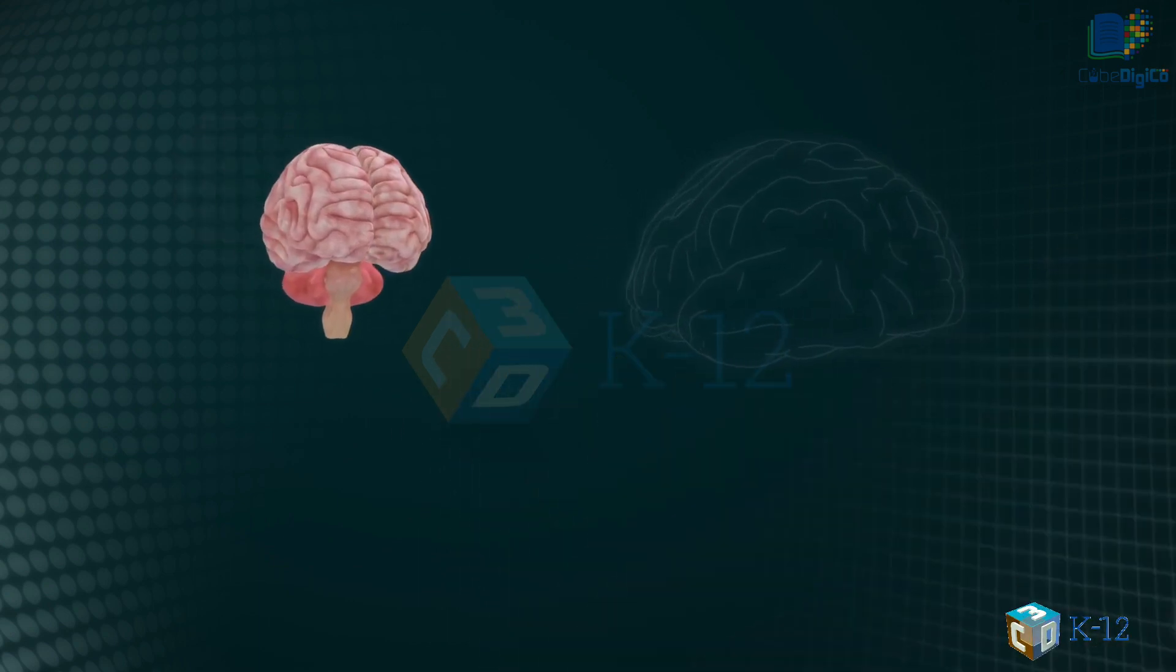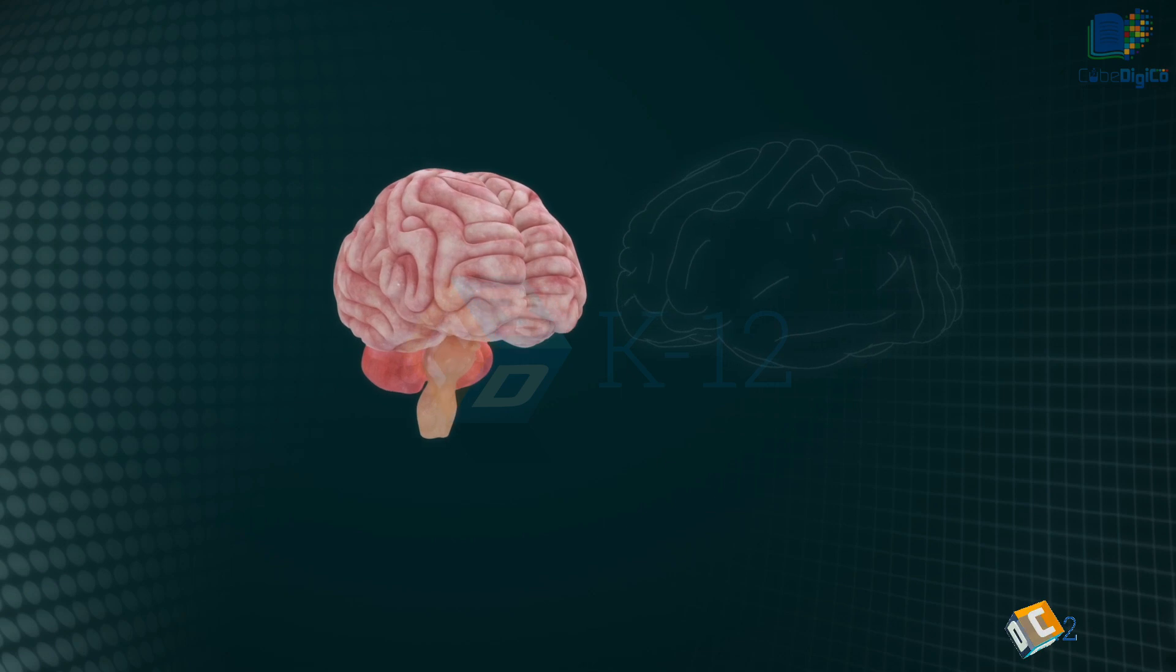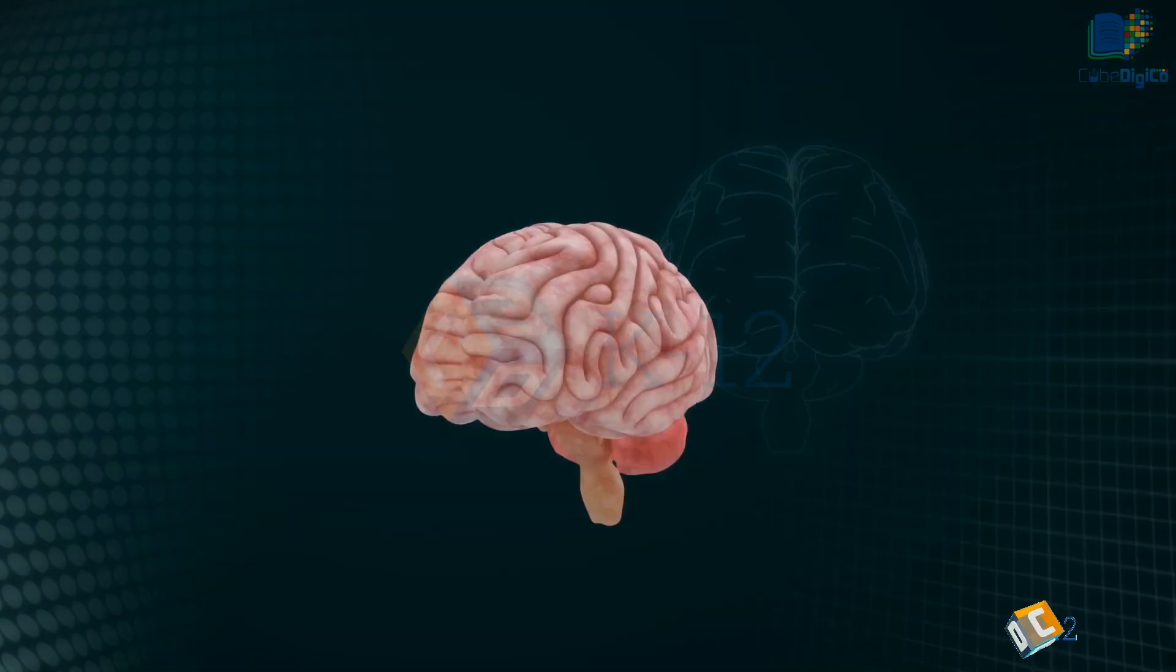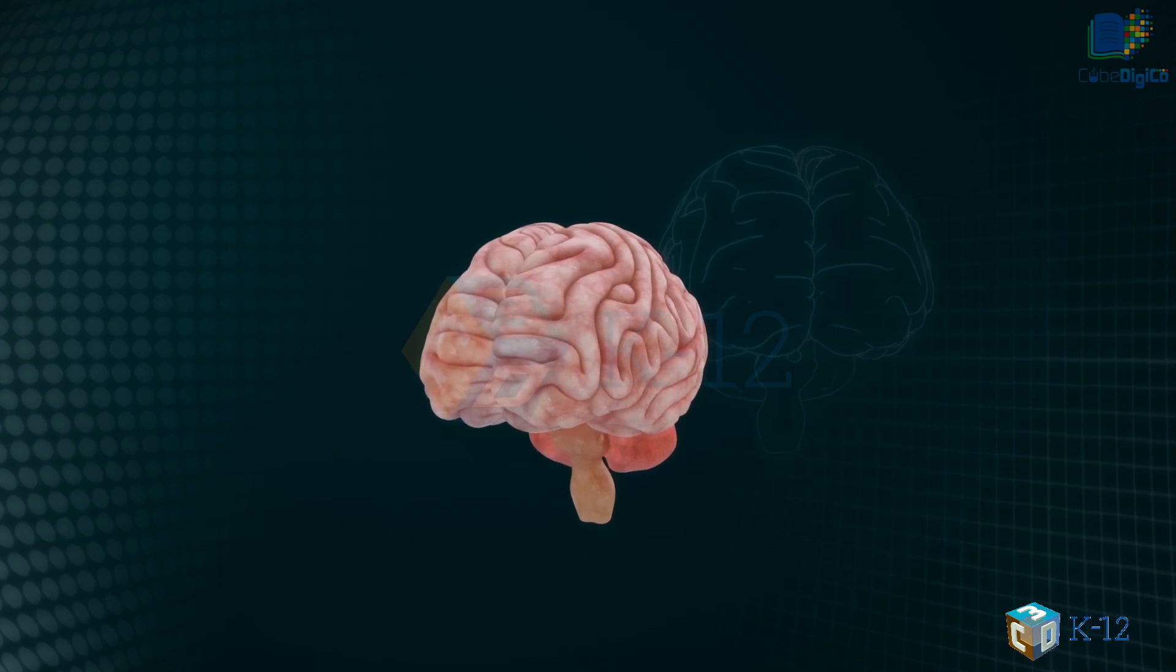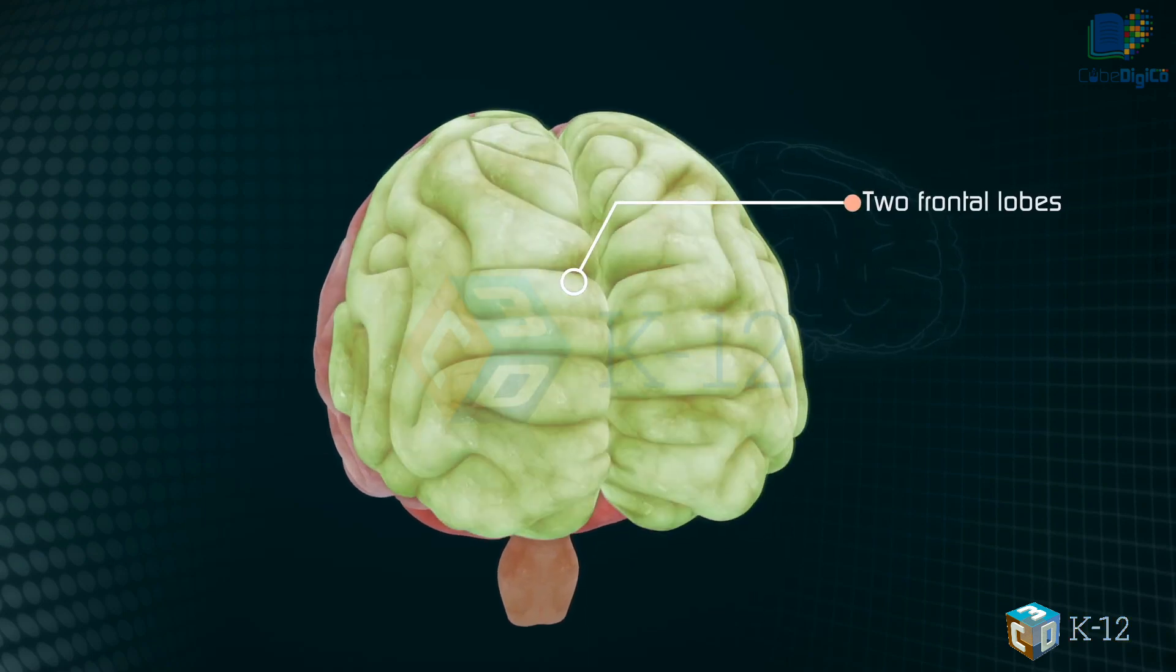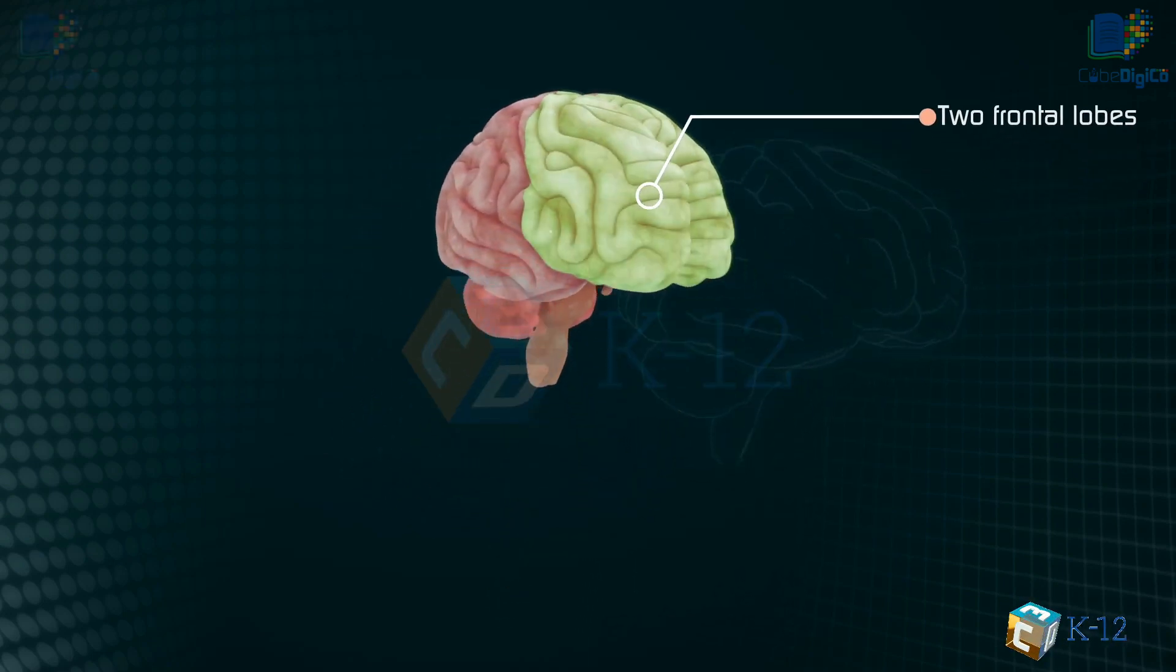Each cerebral hemisphere can be divided into sections, or lobes, each of which specializes in different functions. To understand each lobe and its specialty, we will take the tour of the cerebral hemispheres, starting with the two frontal lobes, which lie directly behind the forehead.